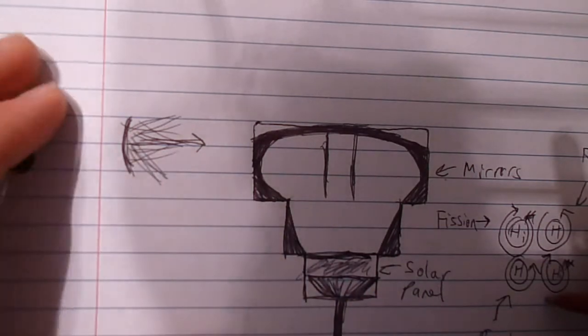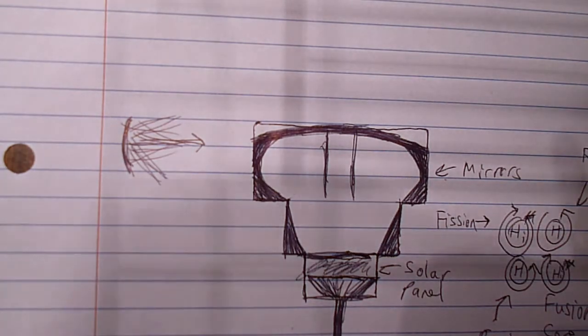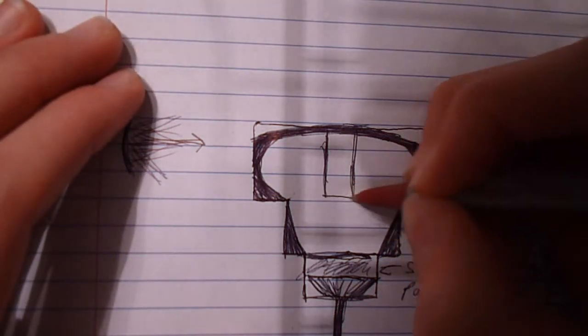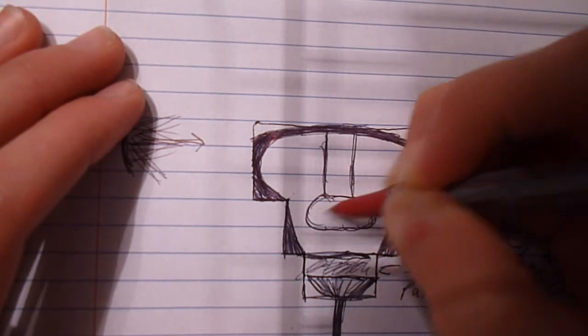So this is the fusion core and it's what's constantly generating the energy. Now the fusion core is inside this ring. Now the way it works is, like I said, it's self-sustaining.